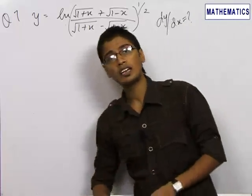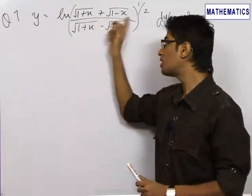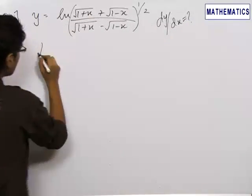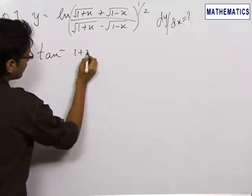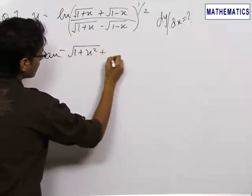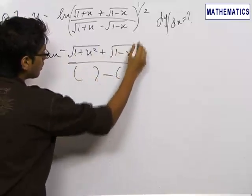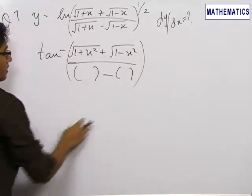Now the beauty of calculus is we had a similar type of term in an earlier problem also. At that time we had tan inverse of √(1+x²) plus √(1-x²) upon these two terms in the denominator getting subtracted.